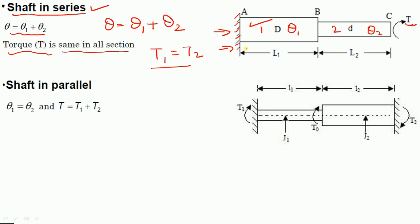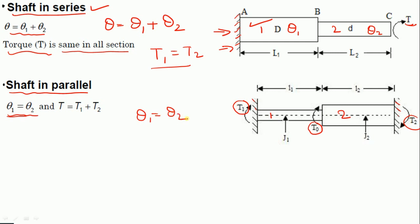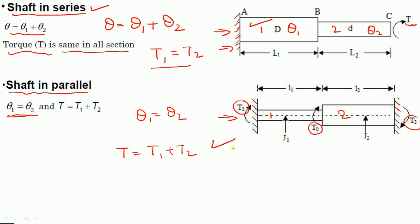Coming to shaft in parallel: shaft 1 and shaft 2 are both fixed. We are giving torque T1 at one point, torque T2, and torque T0 in the middle. In such a case, the deflection theta 1 is equal to theta 2. The total torque T0 is equal to T1 plus T2.